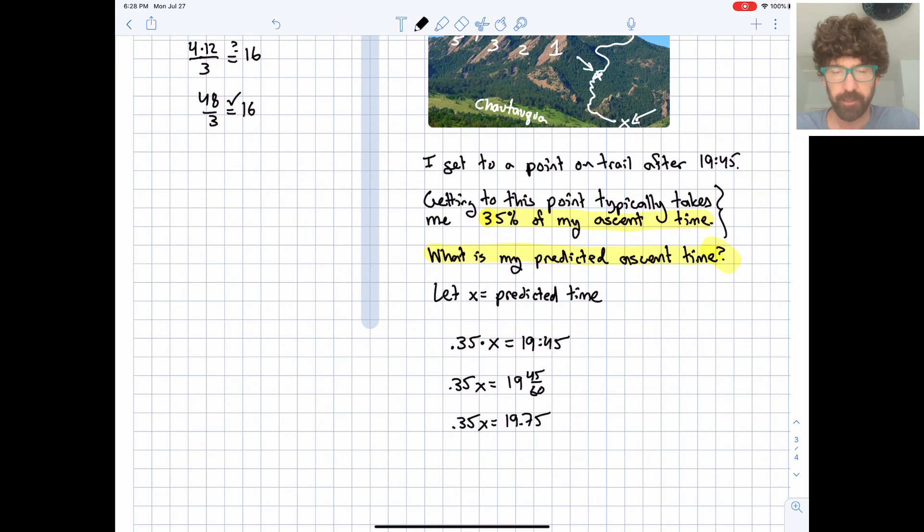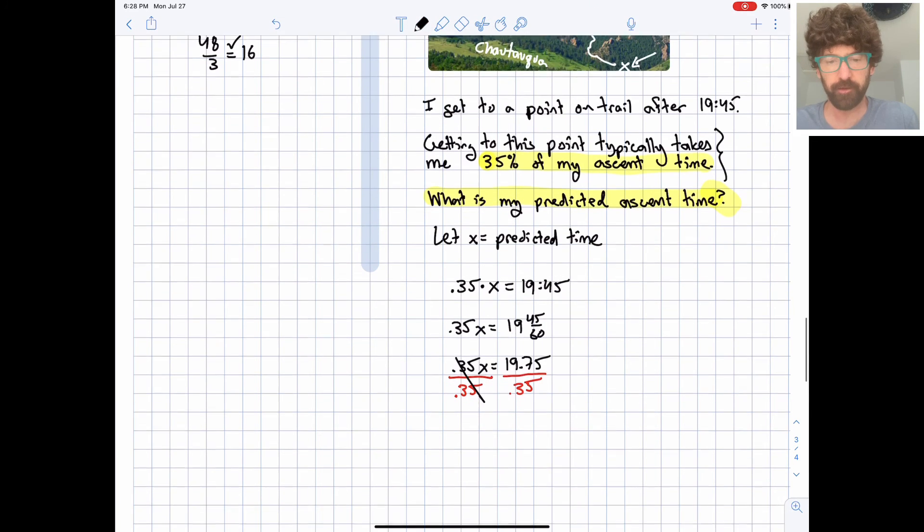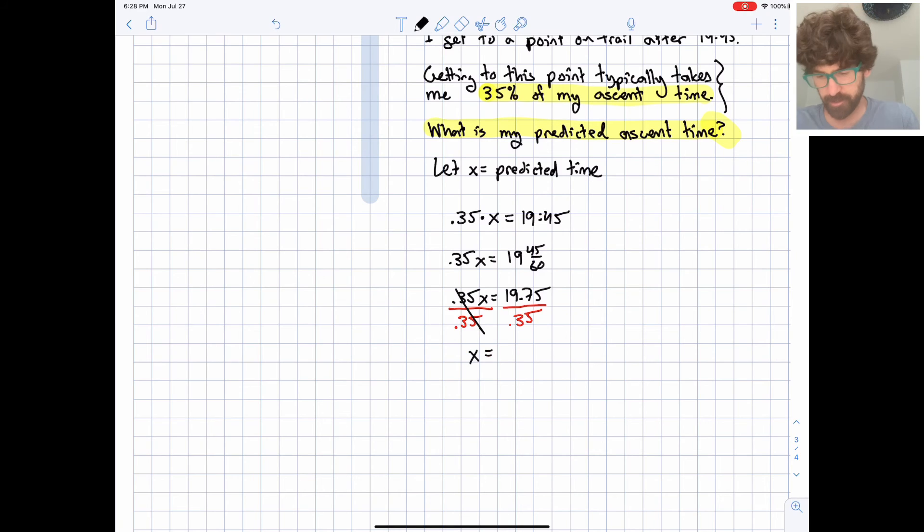So then we're going to go ahead and solve for x. We have everything set up so far. Let's undo the multiplication times .35, we'll undo that by dividing both sides by .35. And then the nice thing about that is it cancels out those .35's on the left. We have just an x remaining, and I have a 19.75 divided by .35. And I get a 56, I'll round to a couple decimal places, .43.